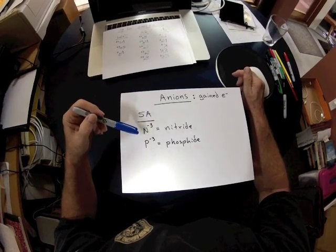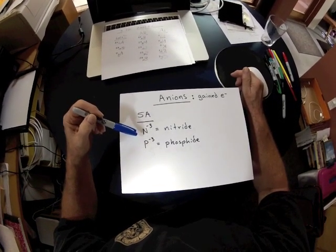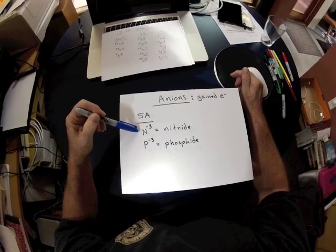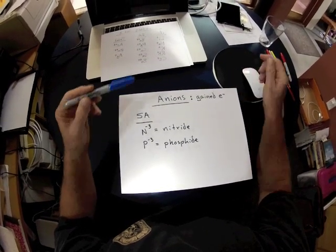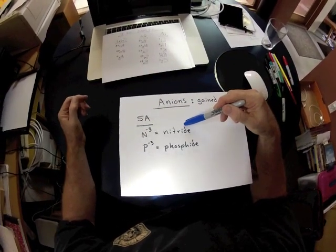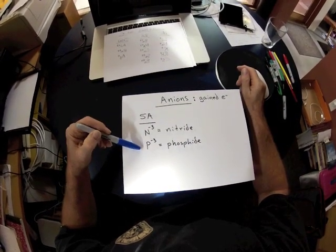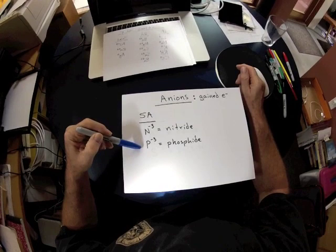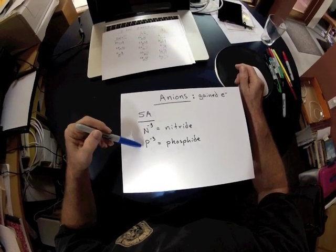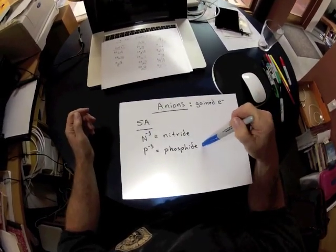In the case of nitrogen, it can take on three electrons. And when it does, it becomes the N-3 anion. Its name is called nitride. Directly underneath it is phosphorus, and it can also take on three electrons, forming P-3, which is called phosphide.